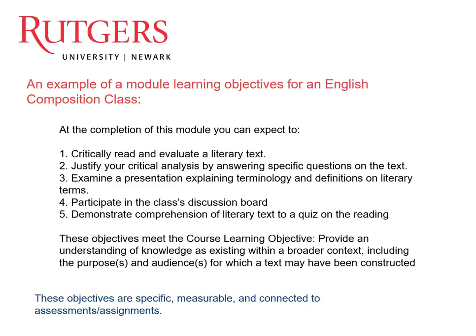These module learning objectives are underneath the umbrella of your course learning objectives. In this example, the course learning objective is to provide an understanding of knowledge as existing in a broader context, including the purposes and audiences for which a text may have been constructed. You can see that larger course objective is now broken down into this module learning objective, which is more attainable for the student.